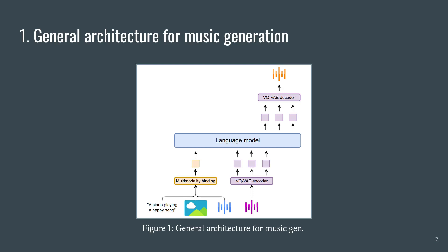It's composed mainly of three different parts. A multimodality binding model generates the same embedding for different modalities and it can be used to condition the language model in the music generation process. For example, we can say generate a piano playing a happy song, or we can provide an image of a piano, or an audio of a piano, and the language model should understand that's what we want to generate.